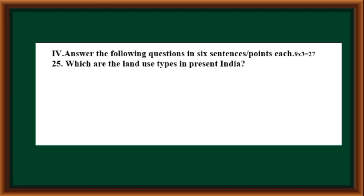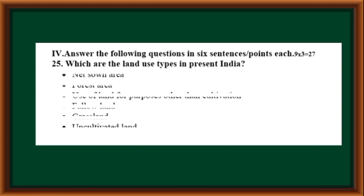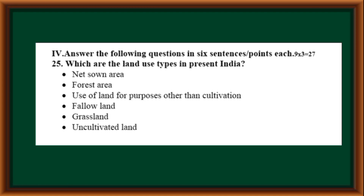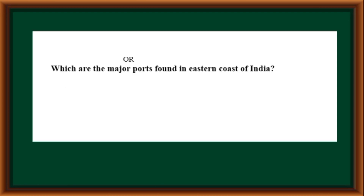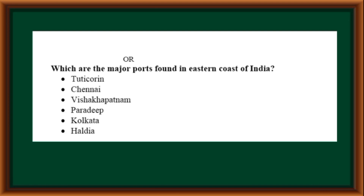Fourth main — Answer the following questions in six sentences or points each. Which are the land use types in present India? Net sown area, forest area, land used for purposes other than cultivation, fallow land, grassland, and uncultivated land. Which are the major ports found on the eastern coast of India? Tuticorin, Chennai, Vishakhapatnam, Paradeep, Kolkata, and Haldia.